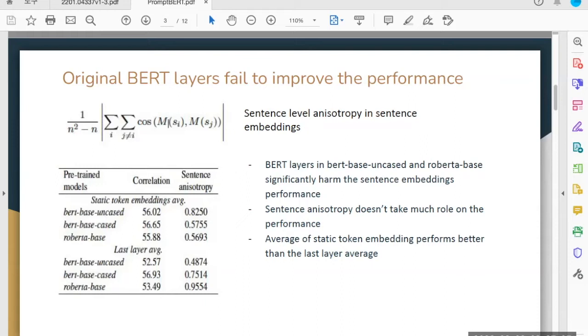Reading from the table, we can notice that BERT-base-uncased and RoBERTa-base significantly harm the sentence embedding performance by comparing the Spearman correlation for the static token embeddings average and last layer average for the models. Sentence anisotropy makes the token embeddings occupy a narrow cone resulting in high similarity between any sentence pair.